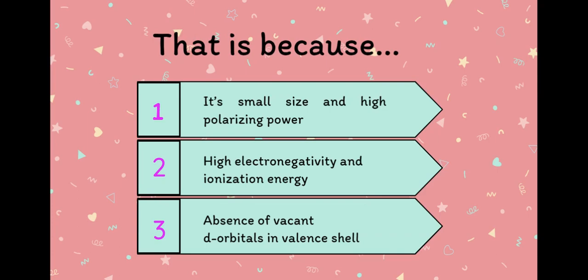Also, due to the absence of vacant d-orbitals in its valence shell, it cannot form more than 4 bonds and hence has coordination number 4.